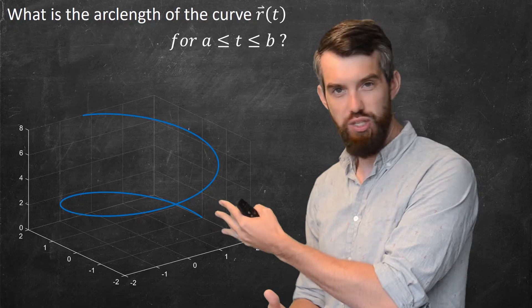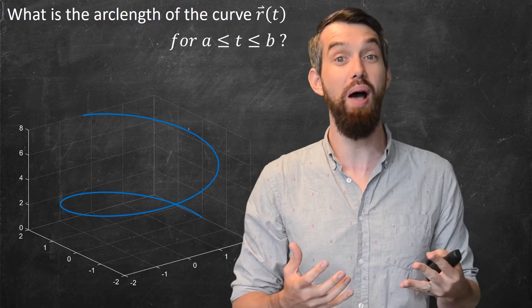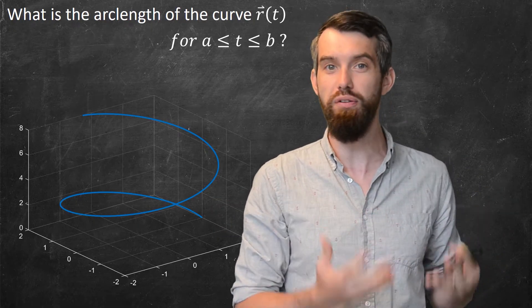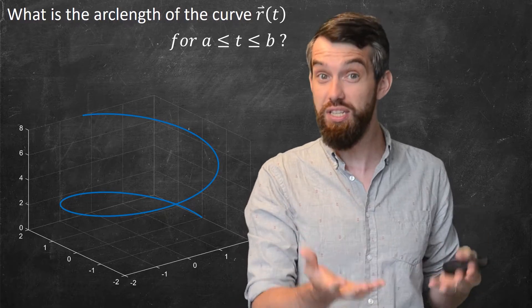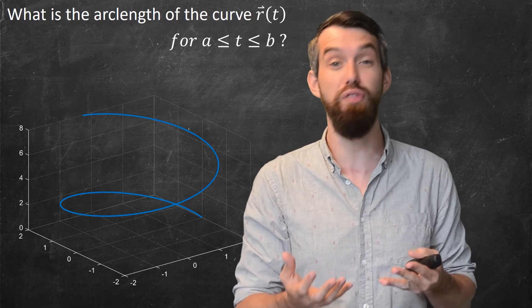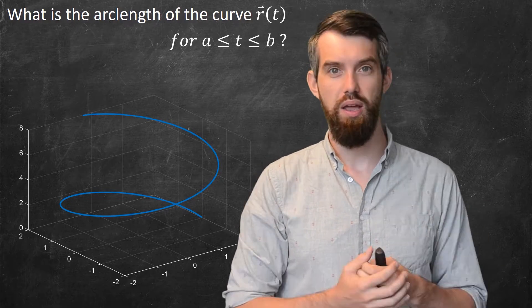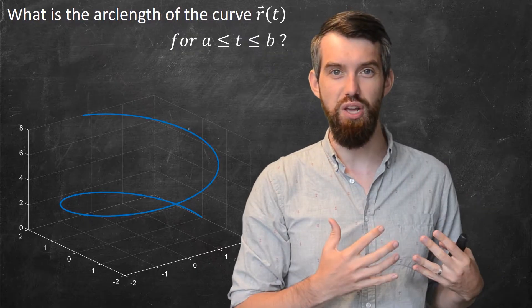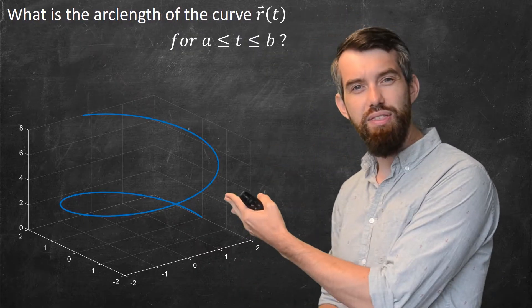Suppose I have some curve, like this one. It's a curve that's given by a vector-valued function r, where the parameter t is allowed to vary between two different numbers a and b. Now, the question we're going to take up in this video is, what is the length of that curve?